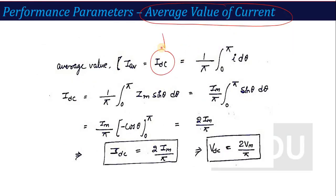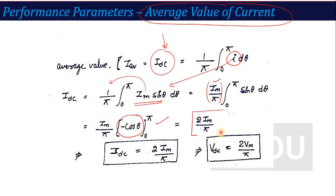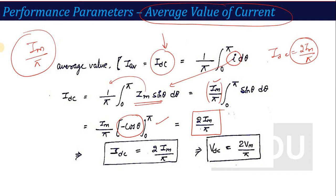The average value, which we call the DC value, is equal to 1 upon π, integrated from 0 to π, of i dθ. Replacing i with Im sin θ — Im is constant and goes outside. So we have Im upon π, and integrating sin θ gives minus cos θ. Applying the limits, we get the formula: Idc = 2Im/π. In the case of half wave, the value was Im/π, so for full wave it is 2Im/π.